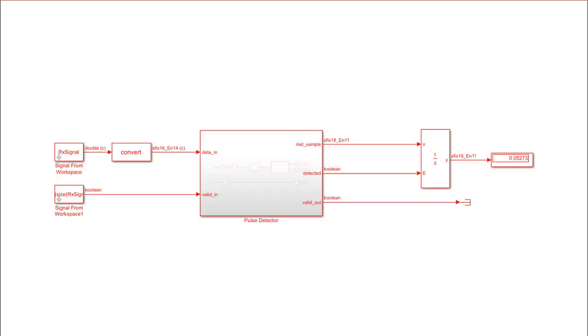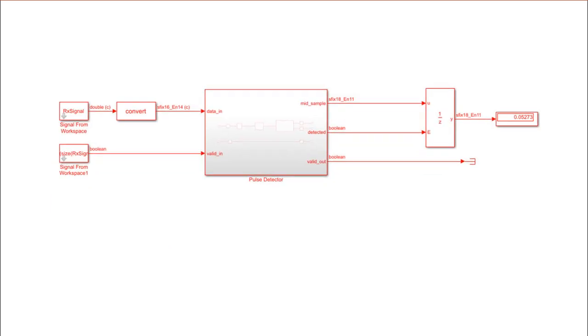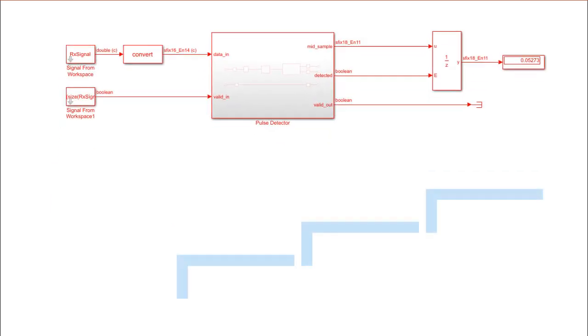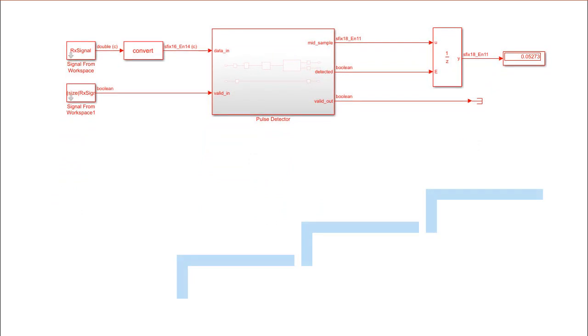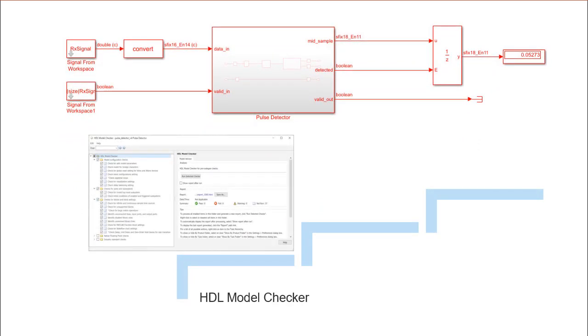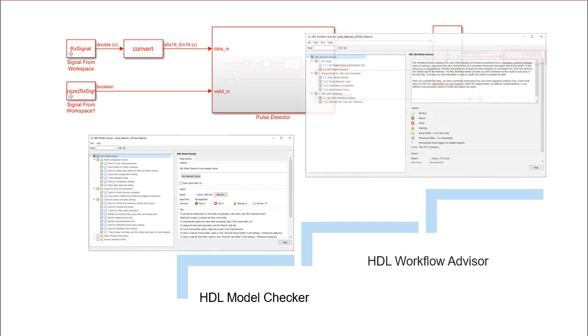We will take the following steps to generate the HDL code. First, we will check the model's compatibility for code generation, and then launch the HDL Workflow Advisor to generate the HDL code.